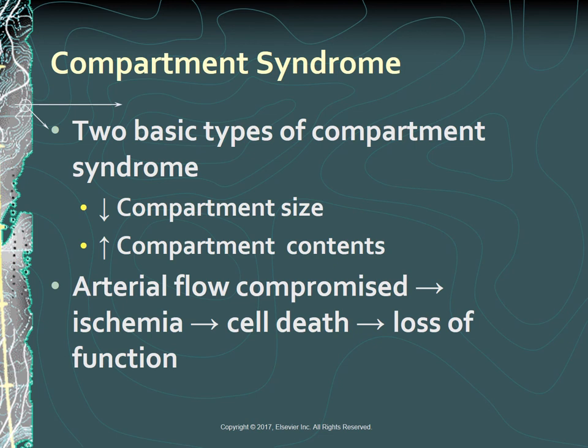Two basic causes of compartment syndrome are: a decreased compartment size resulting from restrictive dressings, splints, casts, excessive traction, or premature closure of the fascia; or increased compartment contents related to bleeding, inflammation, edema, or IV infiltration. Edema can create sufficient pressure to obstruct circulation and cause venous occlusion, which further increases edema. Arterial flow is eventually compromised, causing ischemia in the extremity. As ischemia continues, muscle and nerve cells are destroyed. Fibrotic tissue usually replaces healthy tissue, and contracture, disability, and loss of function can occur.